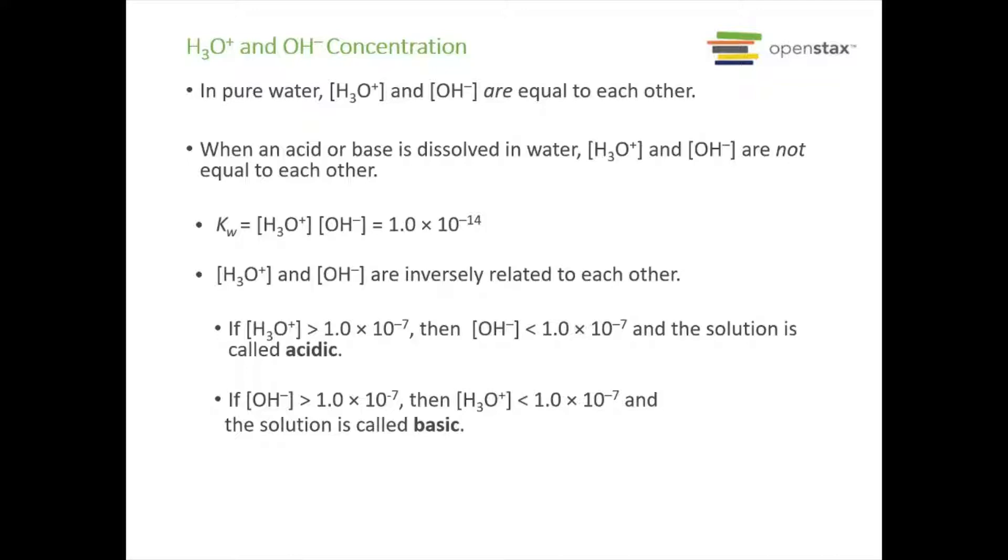In pure water, they are equal to each other, but if we dissolve an acid or base into our water, then our hydronium and hydroxide are not equal to each other anymore. But Kw still stays equal to 1 times 10 to the negative 14. H3O+ and OH- are inversely related to each other. If one goes up, the other has to go down. So if you have a hydronium concentration greater than 1 times 10 to the negative 7, then your OH- must be less than that, and we have an acidic solution. If the opposite is true, your hydroxide concentration is greater than 1 times 10 to the negative 7, then your hydronium must be less than that, and then you have a basic solution.